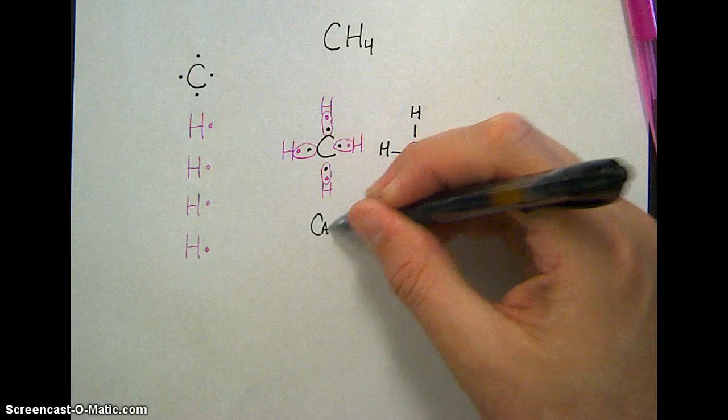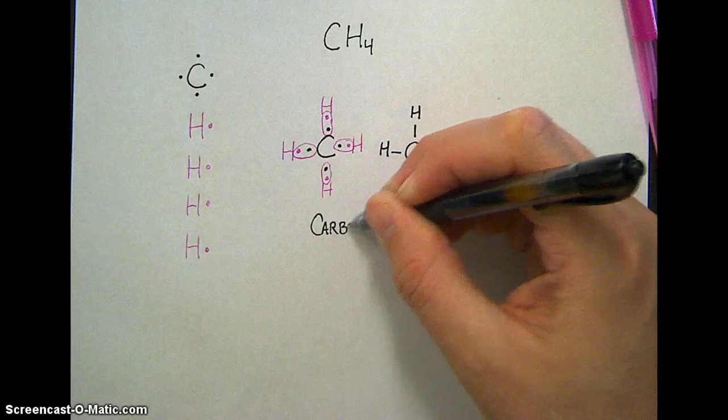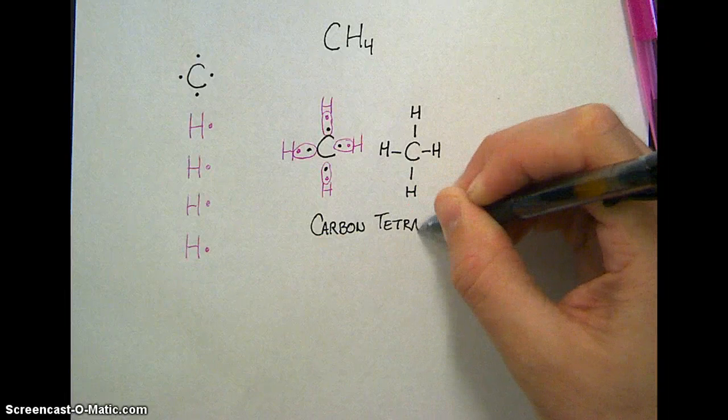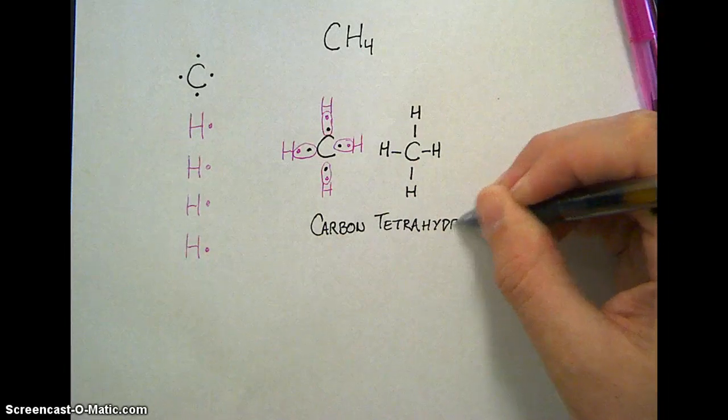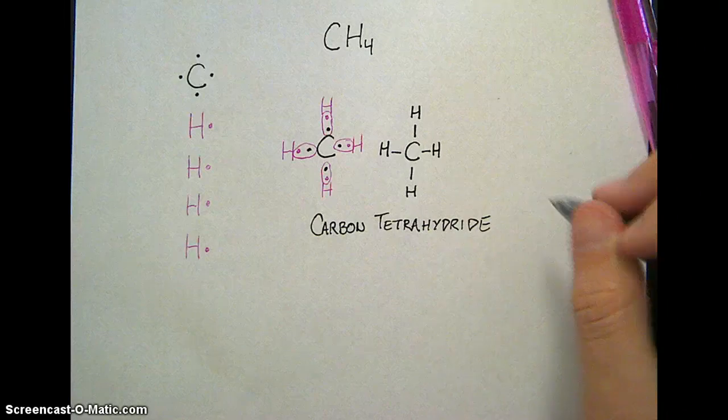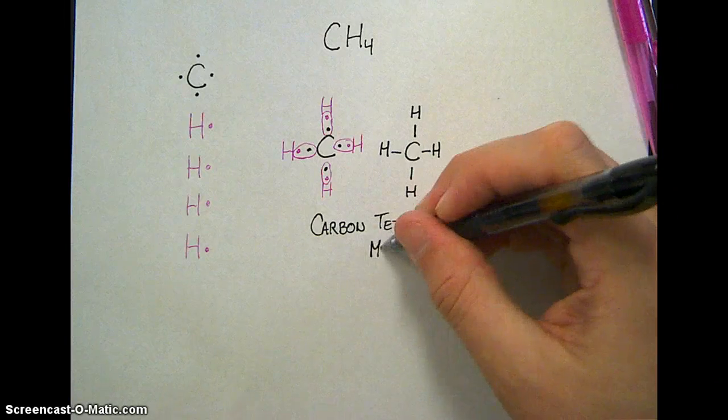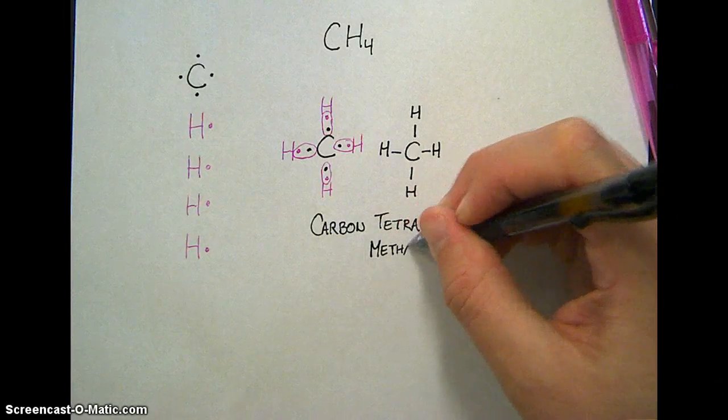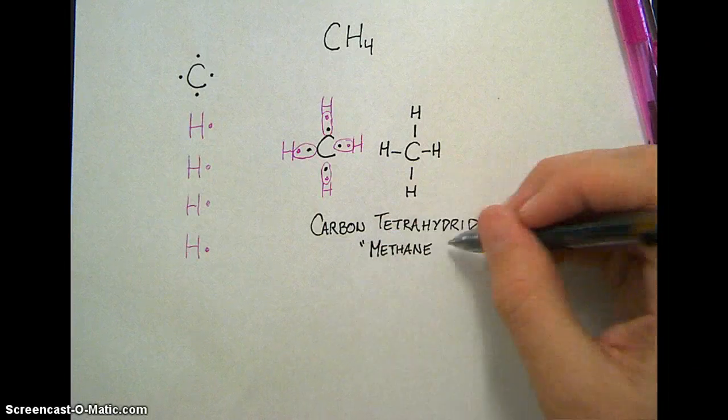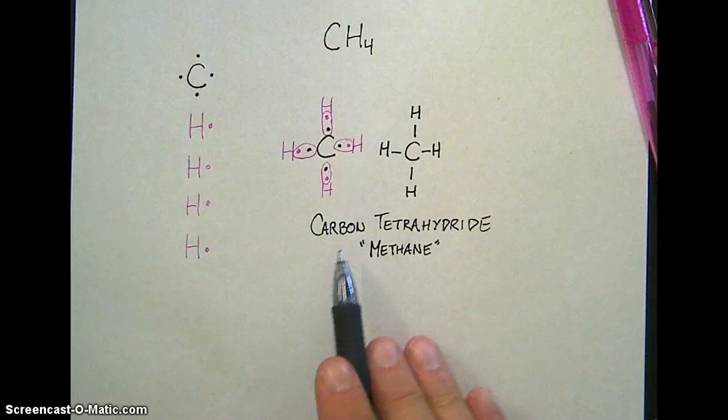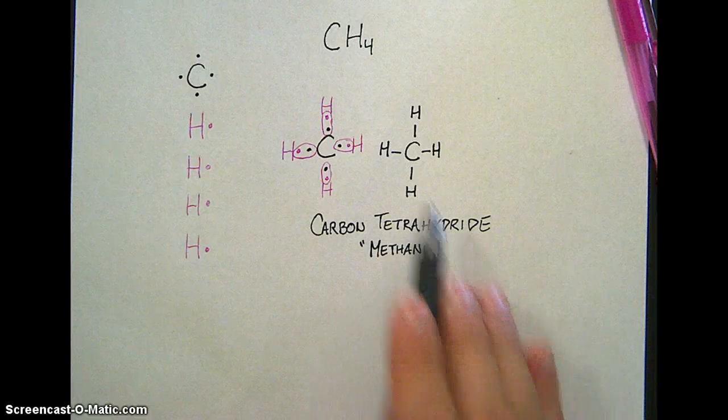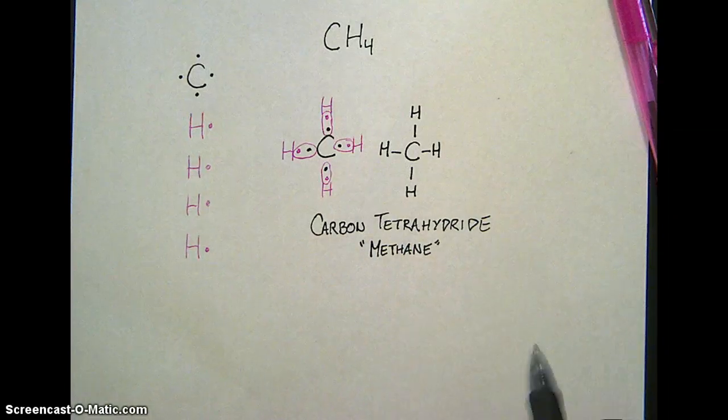One carbon and four hydrogens. We could follow our naming rules and call this carbon tetrahydride, though generally chemists call this one methane. It's part of a family of carbon compounds called alkanes, and methane is the more common name for it. But carbon to indicate one, tetra to indicate four, hydrogens on the hydride. Not bad.